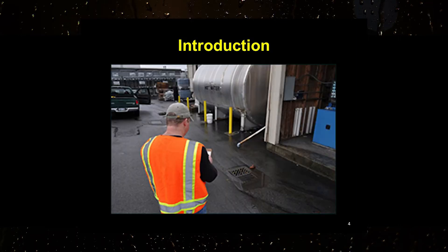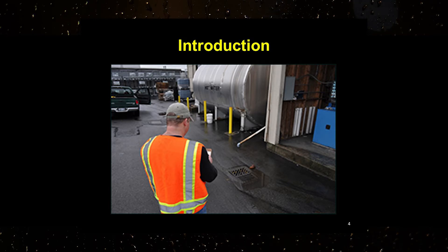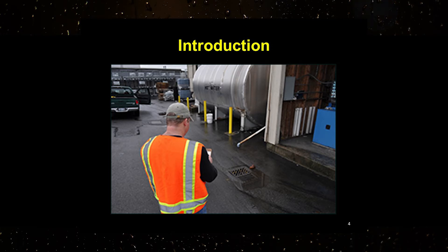Stormwater permits require the visual assessment be conducted as part of the comprehensive inspection. Comprehensive inspections are required quarterly or on an alternate schedule approved by the Water Resource Division of EGLE. The comprehensive inspection must be conducted by an industrial stormwater certified operator, and the visual assessment must be completed within 30 days before or after this inspection.